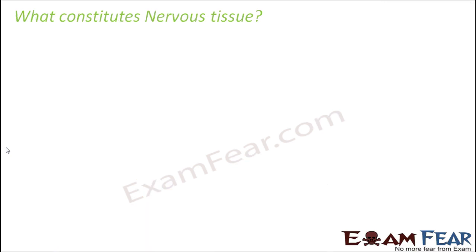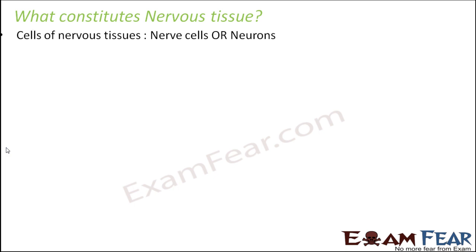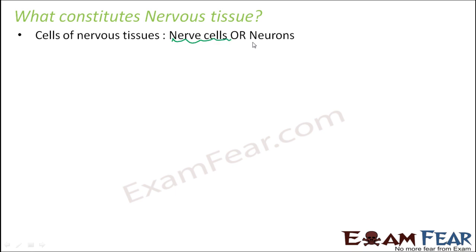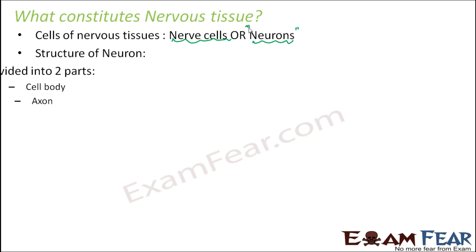Now the question is: what constitutes the nervous tissue? What is it made up of? The cells of the nervous tissue are called nerve cells or neurons — more popularly known as neurons. Neurons are the cells which form nervous tissue. How does a neuron look like? Let us look at the structure of a neuron, because once we know the structure, only then we will know how it actually reacts to stimuli.